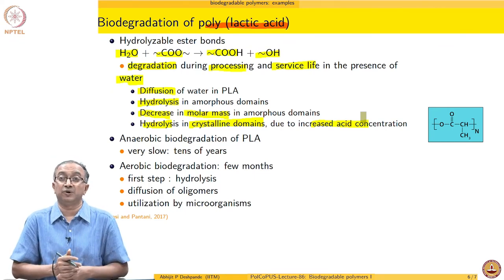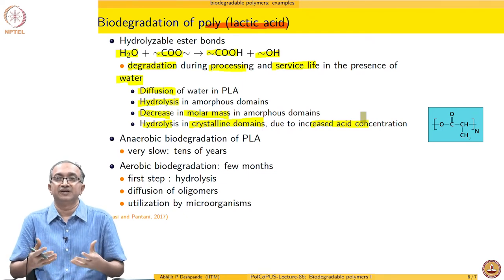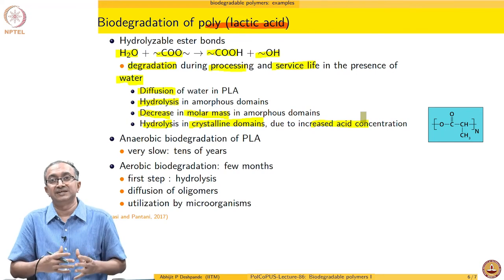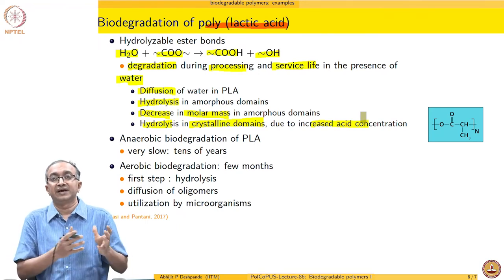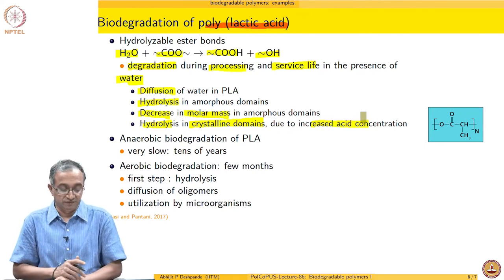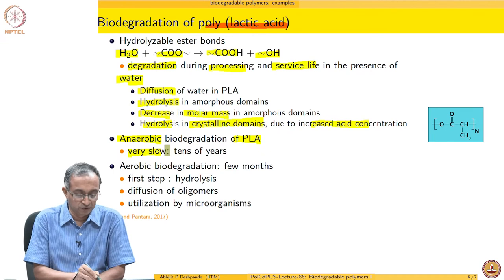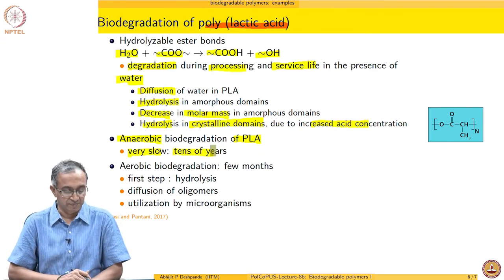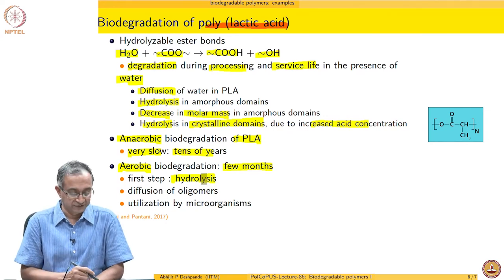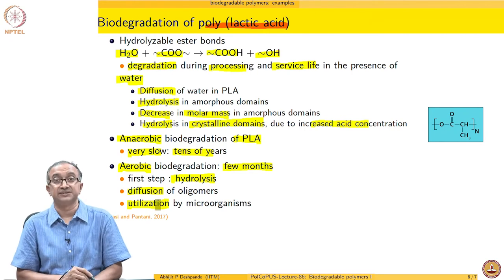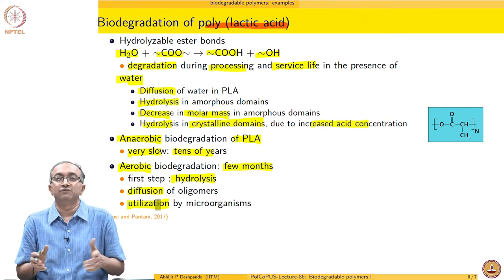Eventually, hydrolysis also begins in the crystalline domain of PLA, aided by the acid formed which dissolves crystals, allowing degradation there as well. In a semicrystalline polymer, the amorphous and crystalline regions respond very differently — from diffusion and absorption to accessibility of enzymes and microorganisms. Biodegradation behavior is thus significantly influenced by polymer morphology. Anaerobic biodegradation of PLA is much slower, taking tens of years, whereas aerobic biodegradation takes only a few months, with the first step being hydrolysis followed by chain breakdown, diffusion, and utilization.